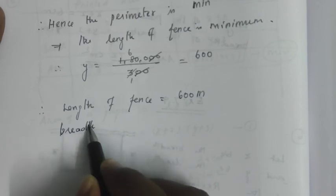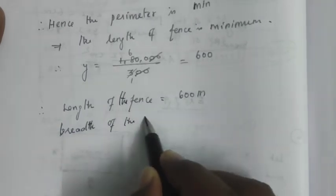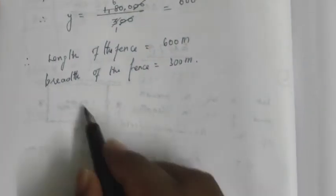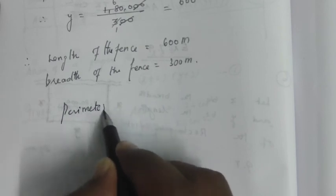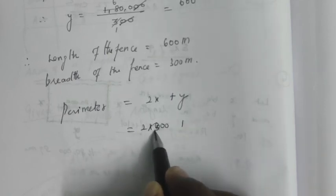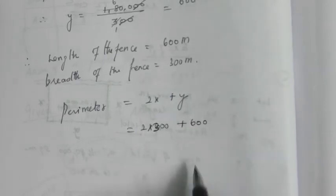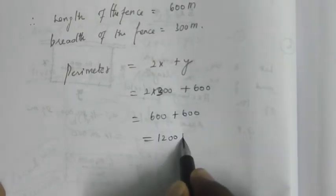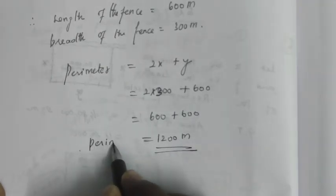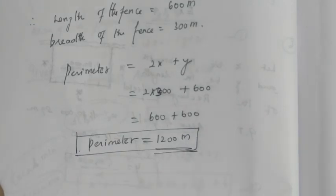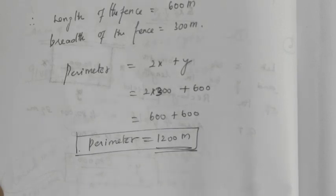Next we calculate the perimeter. Perimeter = 2x + y = 2(300) + 600 = 600 + 600 = 1200 meters. The length of fence needed is 1200 meters. Thank you.